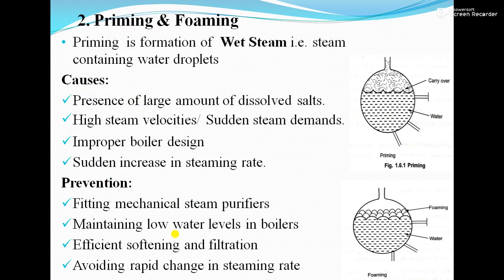Next is priming and foaming. Priming is the formation of wet steam — that is, steam containing water droplets. Due to violent and vigorous boiling, wet steam forms. The causes are: first, presence of a large amount of dissolved salts; second, high steam velocities and sudden steam demands; third, improper boiler design; and fourth, sudden increase in the steaming rate.